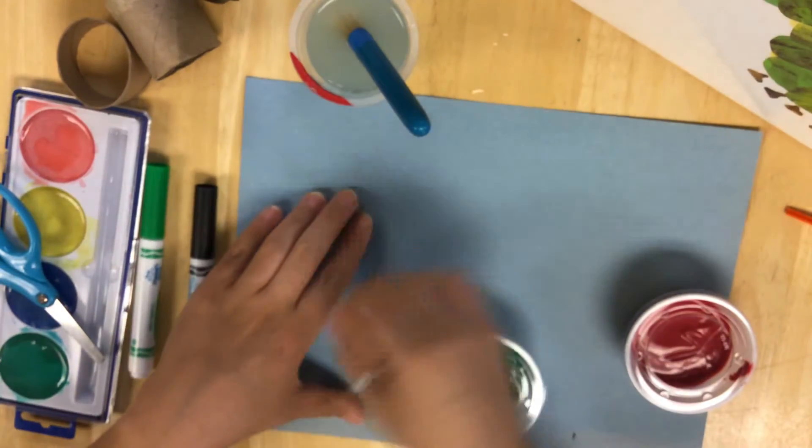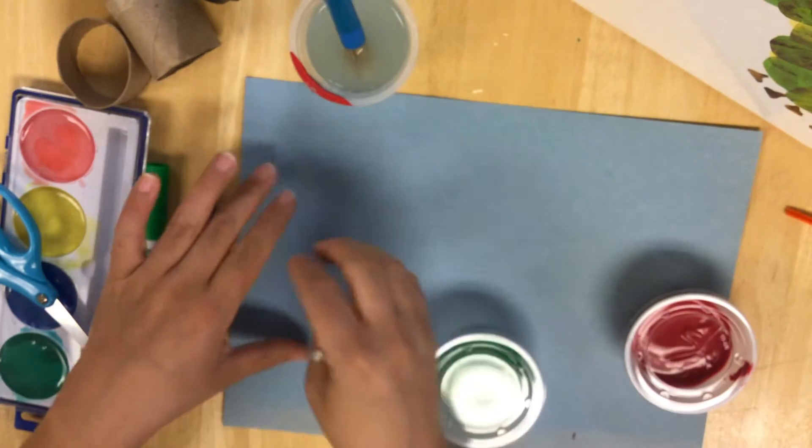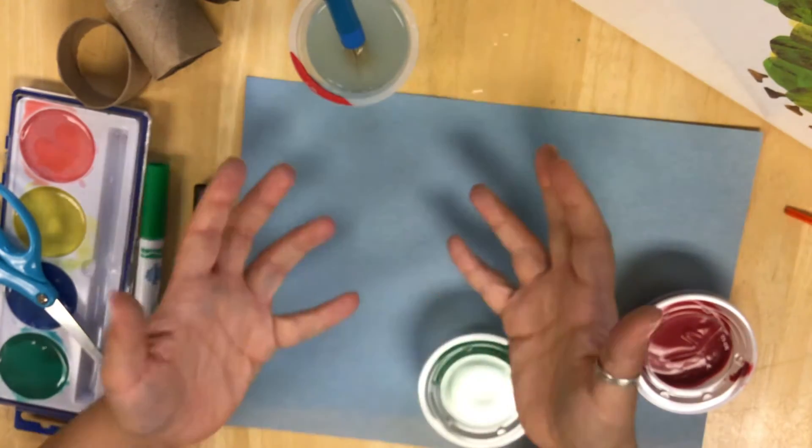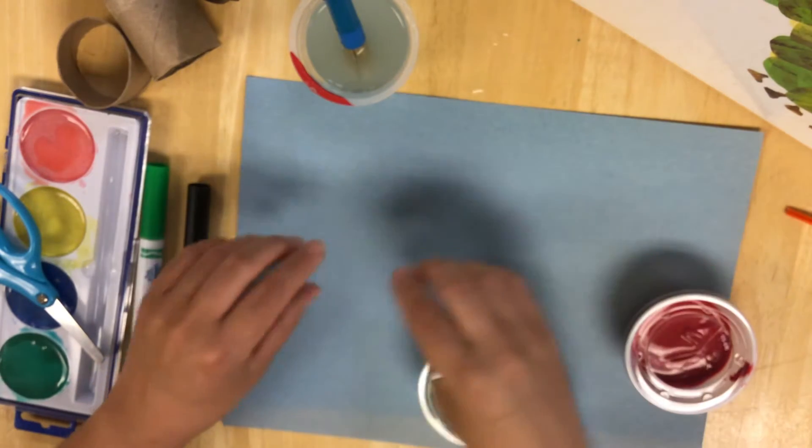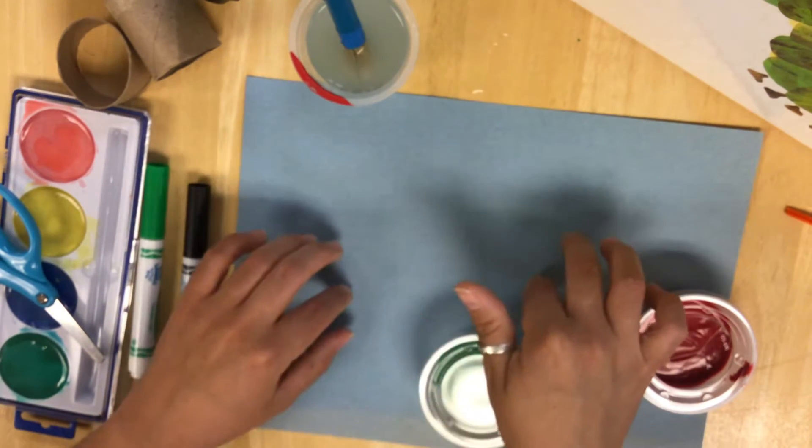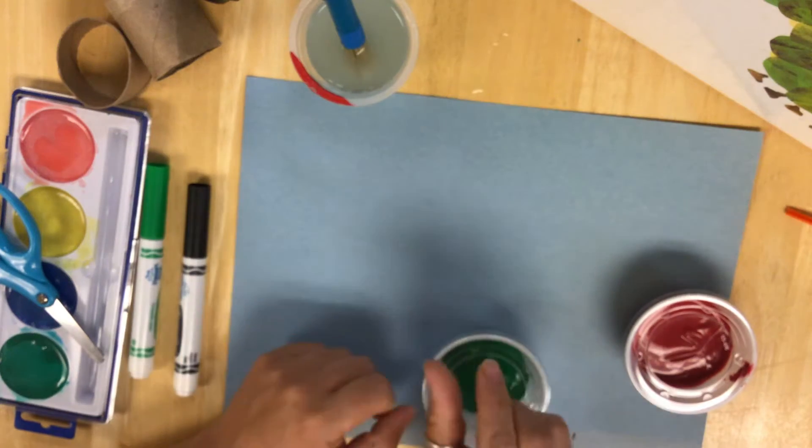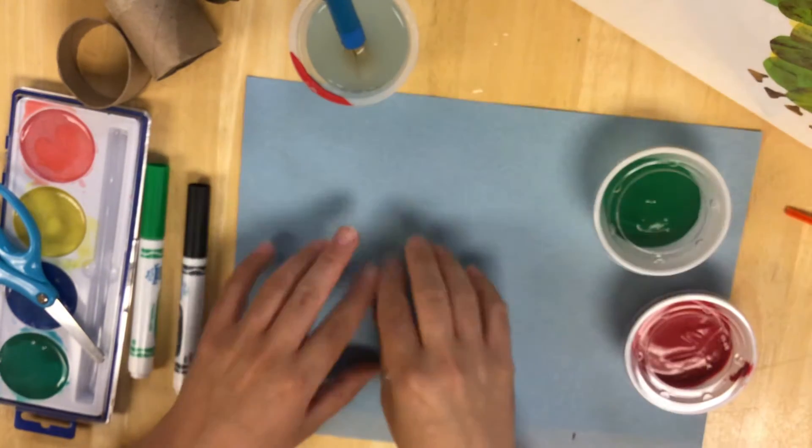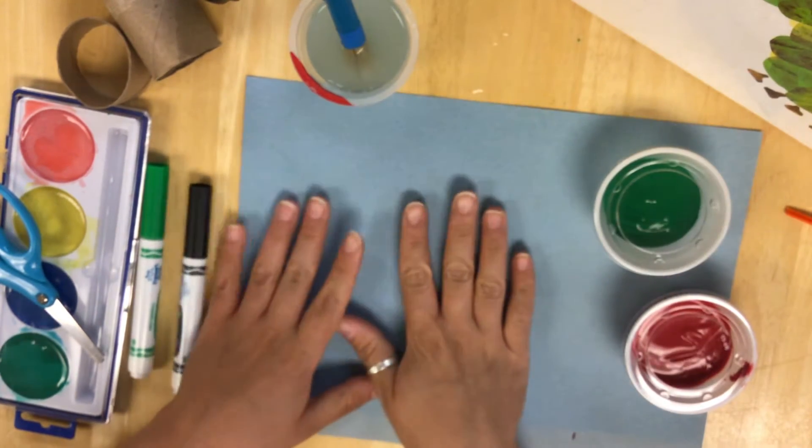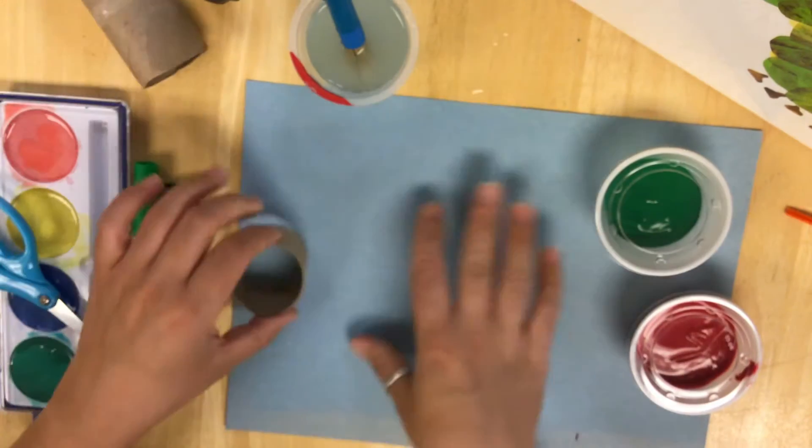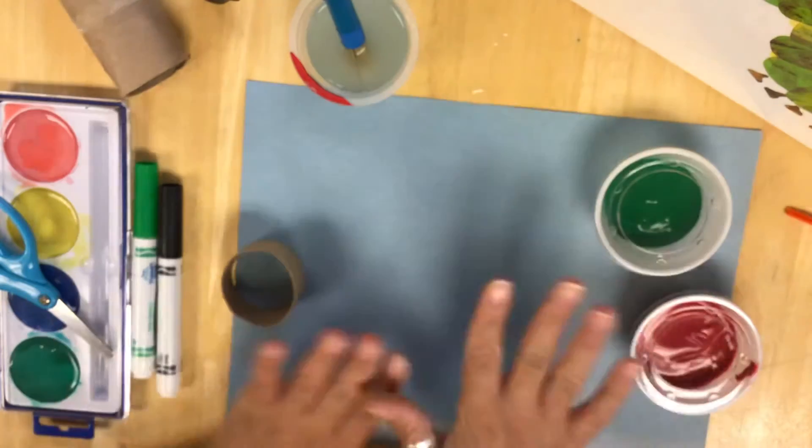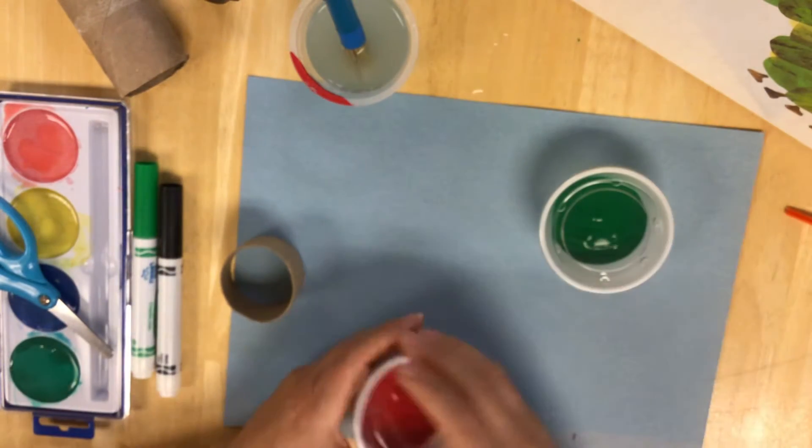So what we're going to be doing is we're gonna be making a caterpillar. Caterpillars are made up, well this particular caterpillar is gonna be made up of circles. Caterpillars have lots of different feet and they tend to be kind of long and skinny like worms but they have little legs. So our Very Hungry Caterpillar you have red and green. If you have other paints at home please feel free to use them. You don't have to just use these colors. This is just what we sent home.